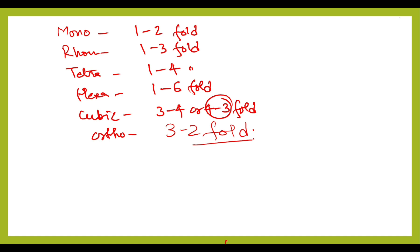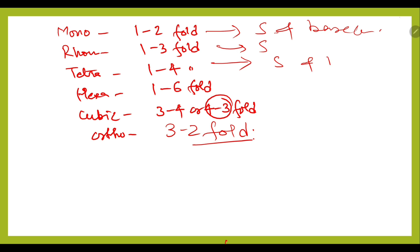With monoclinic, first this is simple and base-centered. Rhombohedral is simple. Tetragonal is simple and body-centered. Hexagonal is simple, and cubic has simple, body, and face-centered cubic.